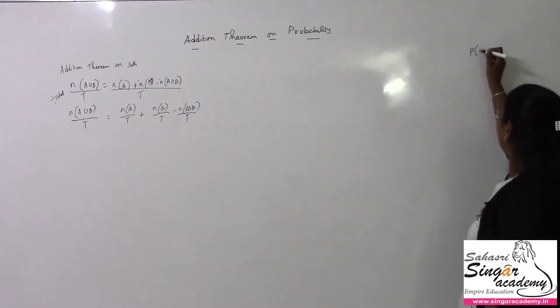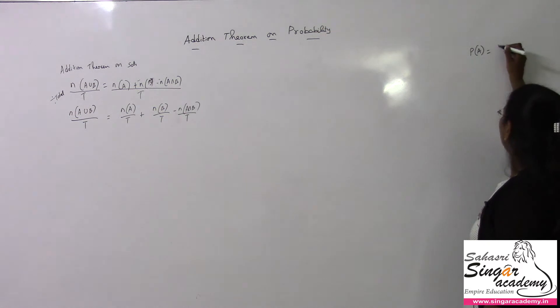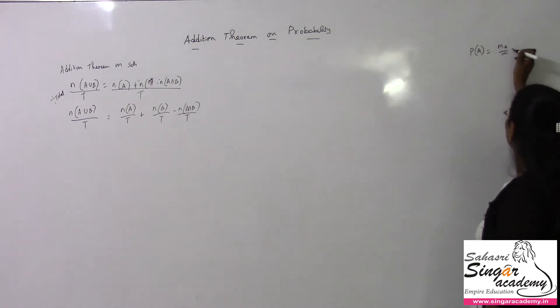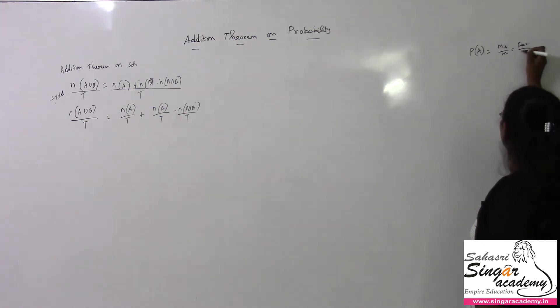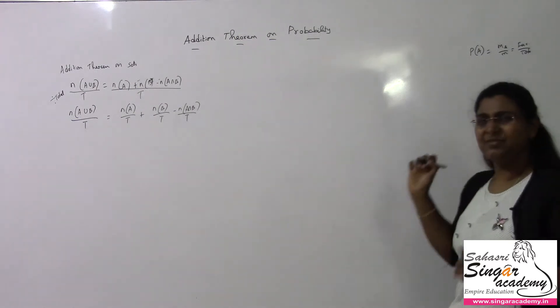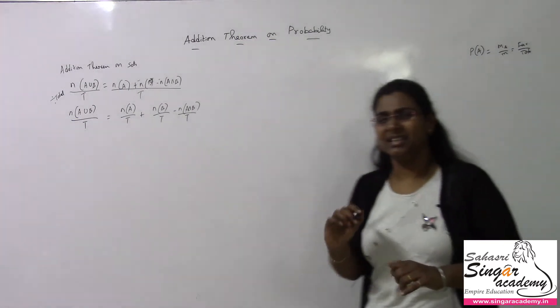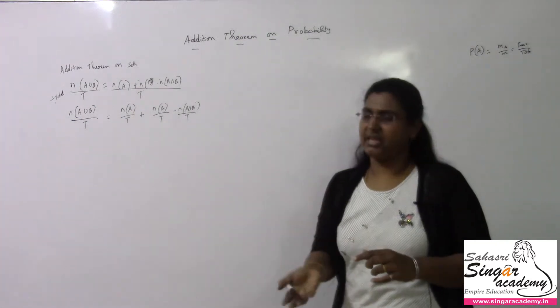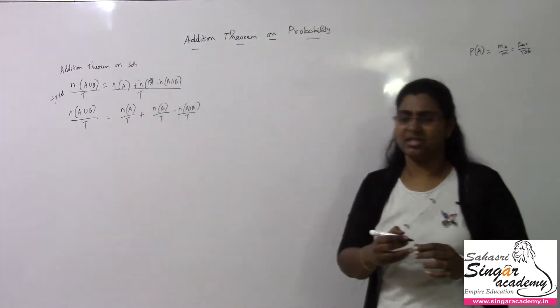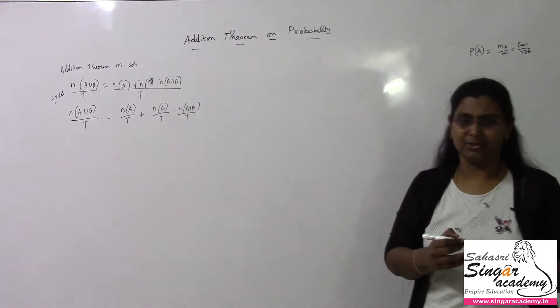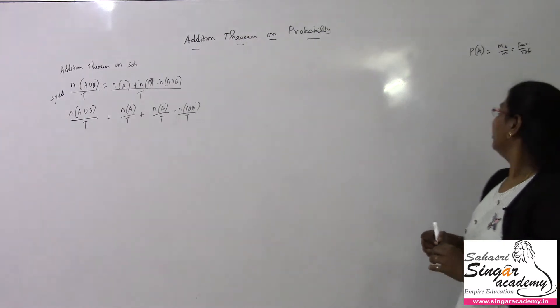If we look at probability, P(A) = m/n, which is favorable divided by total. This favorable event is nothing but mutually exclusive and exhaustive.